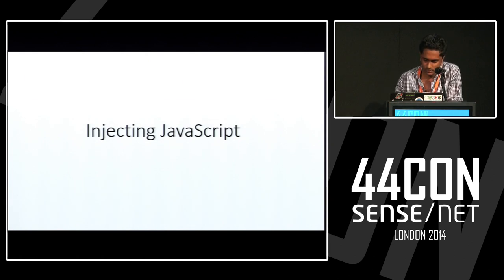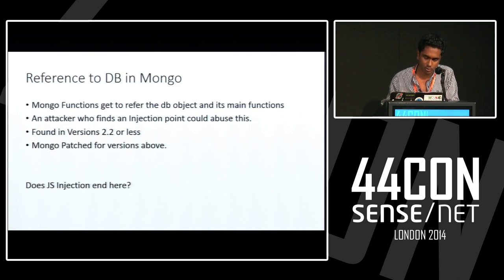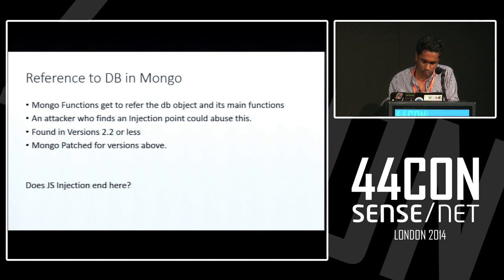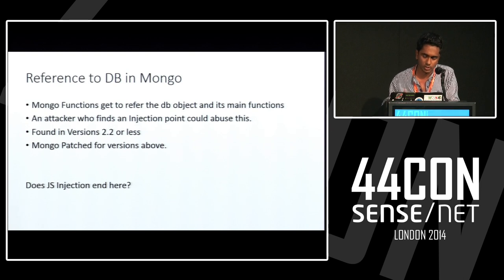Injecting JavaScript. A key point to note is that Mongo refers to a database object and its main functions. If an attacker finds an injection point, he could take the database object and call further functions like collections or any other functions possible within the Mongo shell. This was a problem within applications developed by developers — an attacker could take the database object and access functions within the API. It was found and patched for versions 2.2 and above.